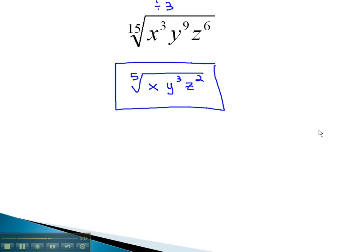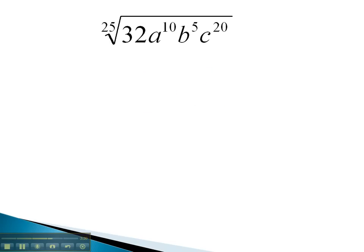Let's take a look at another example, where we can divide all the exponents and the index by the same thing. In this problem, we can't reduce quite yet, because the 32 does not have an exponent. However, we can factor that number using its prime factorization in order to get exponents.